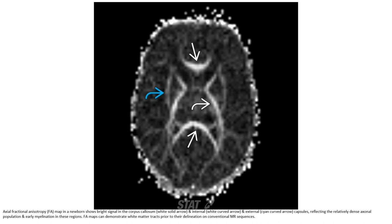This is an axial diffusion image showing bright signal in the corpus callosum, internal and external capsule, reflecting the relatively dense axonal packing and early myelination in this region. Diffusion tensor imaging can demonstrate white matter tracts prior to their myelination on conventional MRI sequences.